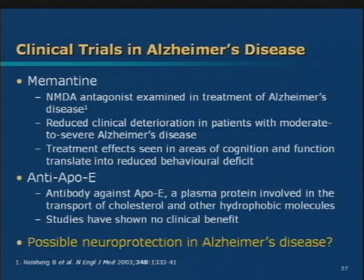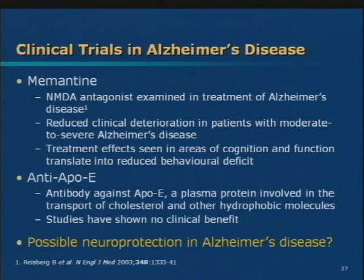In Alzheimer's disease, we may be doing just a little bit better. There's a drug called memantine which blocks a certain receptor in the brain. It seems to reduce the impact of symptoms of Alzheimer's disease and may slow down progression — therefore we think it may be functioning as a neuroprotective agent. There are other strategies, like ApoE, another factor thought to be involved in the evolution of Alzheimer's disease, which didn't show any specific benefit. So in Alzheimer's disease there may be some role for neuroprotection.